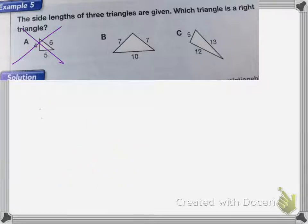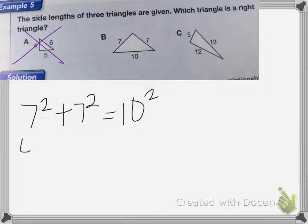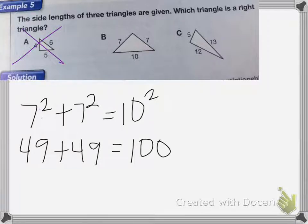Now we'll try B. So B would be 7 squared plus 7 squared would have to equal 10 squared. Well 7 squared is 49, plus 49 would have to equal 100. Well, 49 plus 49 is not equal to 100, so it can't be B.